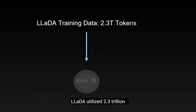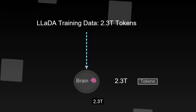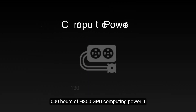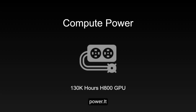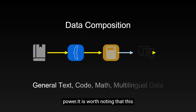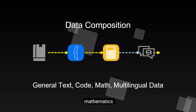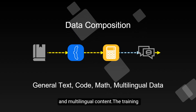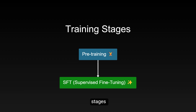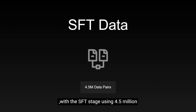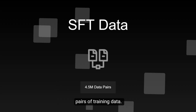In terms of training, LIDA utilized 2.3 trillion (2.3T) tokens of training data, employing 130,000 hours of H800 GPU computing power. The training data includes general text, code, mathematics, and multilingual content. The training process is divided into two stages: pre-training and supervised fine-tuning (SFT), with the SFT stage using 4.5 million (4.5M) pairs of training data.